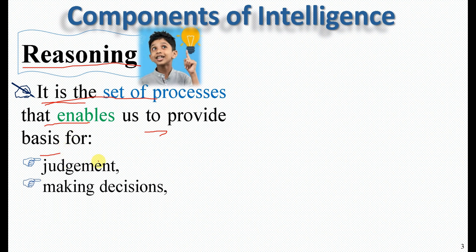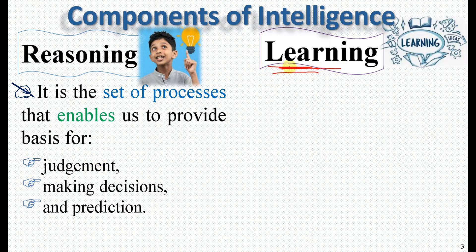We have our own reasoning and also making a decision. This intelligence has the capability to make judgment, make a decision, and prediction. We call it reasoning. The second component of intelligence is learning.